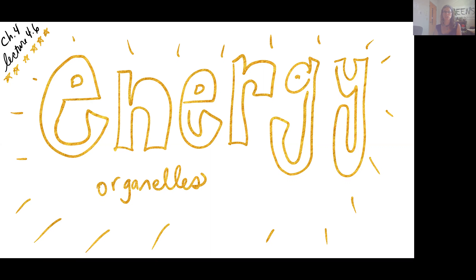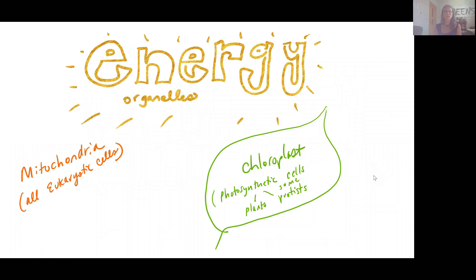Our topic for this video are the energy organelles, and we will see that there are two energy organelles for us to talk about. We have the mitochondria, which we will see present in all eukaryotic cells. Mitochondria is the plural form of the word mitochondrion — the R-I-O-N ending is the singular version. In the case of our chloroplasts, this is another important energy organelle, but we will only see this one found in cells that are photosynthetic — so our producers.